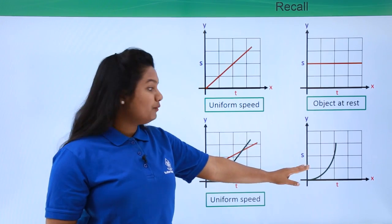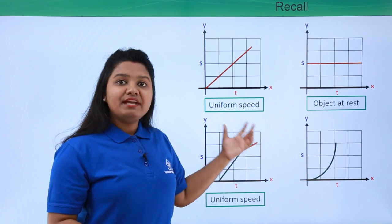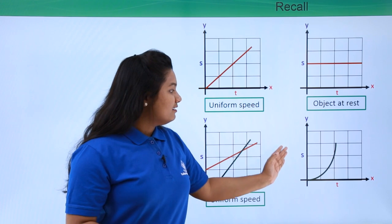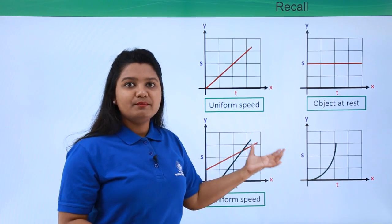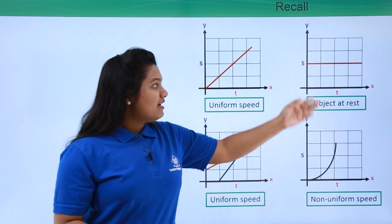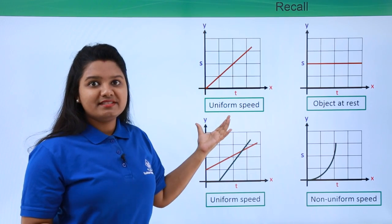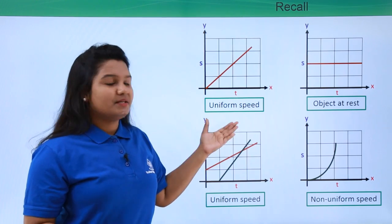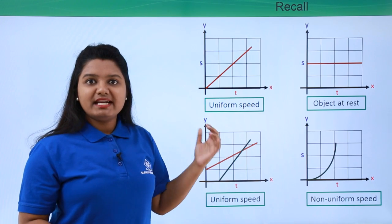Moving on to the fourth graph — this is not a straight line. A distance-time graph which is not a straight line represents a body moving with non-uniform speed. So these are all four types of graphs we will use while interpreting more complex distance-time graphs. Let's get started.